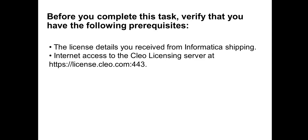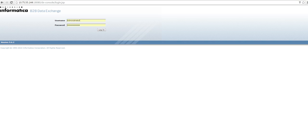Before we start, you need to follow a few prerequisites. The license details which you have received from the Informatica shipping should be noted, and internet access to the Clio licensing server at license.clio.com port 43 has to be verified — you should be able to log into this.